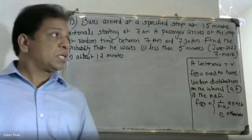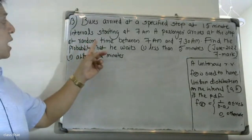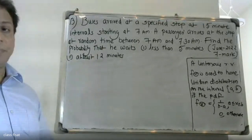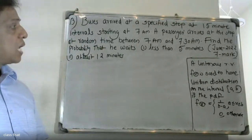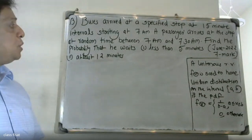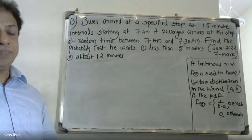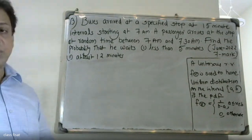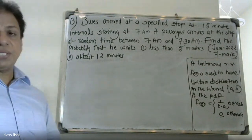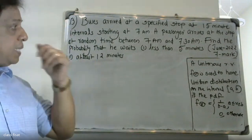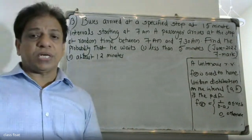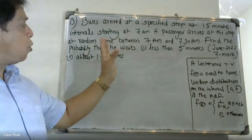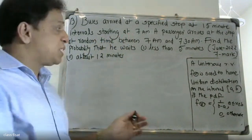Good morning students. A question: buses arrive at a special store at 15-minute intervals starting at 7 a.m. A passenger arrives at a random time between 7 a.m. and 7:30 a.m. Find the probability that he waits less than five minutes. Second question: find the probability of waiting at least 12 minutes.